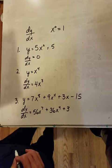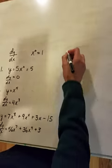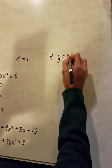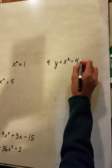So now let's take a look at number four. We have y is equal to x squared, minus 4x, minus 3.